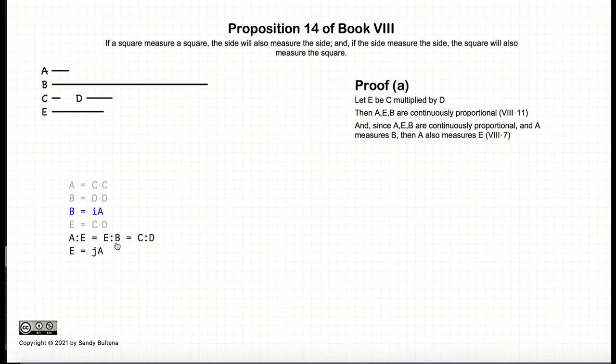Now, since A to E is equal to E to B, and they're continuously proportional, then if A measures B, then A also measures E. And that's from Proposition 7. It states that if the first element measures the last element, then it also measures the second element. So we know that A measures E.